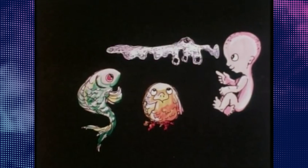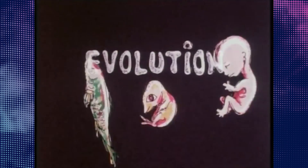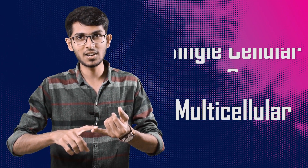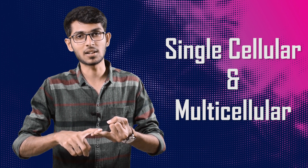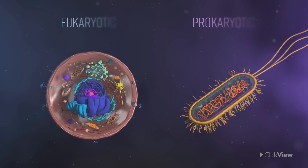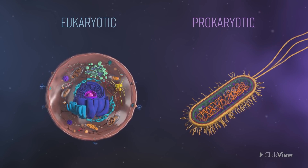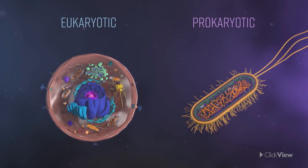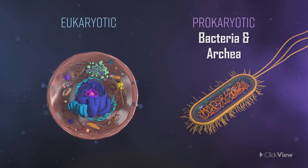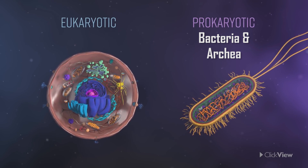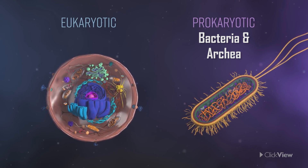We can see how many species there are. First, we can see that from a single-cellular organism to a multi-cellular organism. We can see two types: one is prokaryotes and one is eukaryotes. In prokaryotes, we have bacteria and archaea. In eukaryotes — plants, animals, and all cells in our body — we will study these eukaryotic cells.